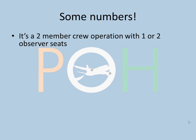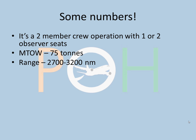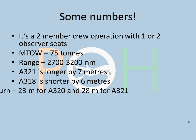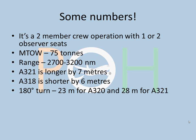Some numbers to note: it's a two-member crew operation with one or two observer seats. Max takeoff weight is 75 tons — just a reference value. Range is 2,700 to 3,200 nautical miles. The A321 is longer by 7 meters compared to the 320, and the 318 is shorter by 6 meters. For ground maneuvering, the A320 requires a minimum pavement width of 23 meters to make a 180-degree turn, but the A321 requires 28 meters, so extra care is needed when taxiing the 321, especially at smaller airfields.